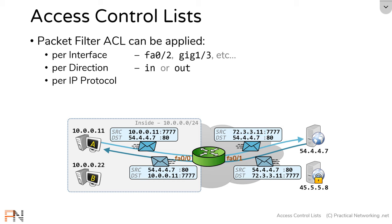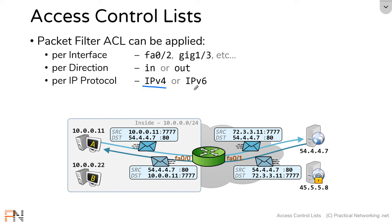The last thing to consider when applying your access list is the IP protocol — specifically, IPv4 or IPv6. A single access list will only filter either IPv4 traffic or IPv6 traffic, not both. So if you wanted to filter both v4 and v6 traffic, you would have to create two different access lists and apply them to a particular interface in a particular direction.